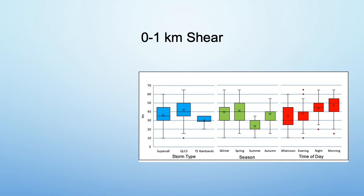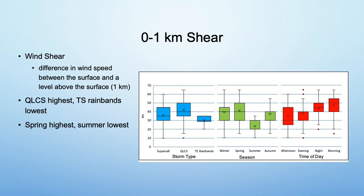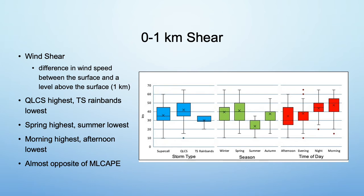Moving on to 0 to 1 km shear. Wind shear is the difference in wind speed between the surface and a level above the surface — that level is 1 km for this project. QLCSs had the highest average shear and TS rain bands had the lowest. Spring was the season with the highest average, whereas summer was the lowest. Morning was the time of day with the highest average and afternoon was the lowest. These trends are almost opposite of the trends for ML CAPE.